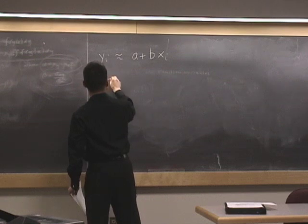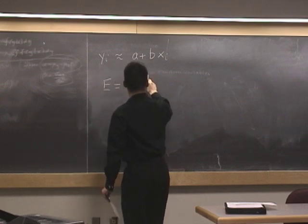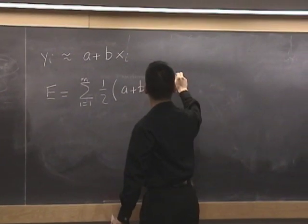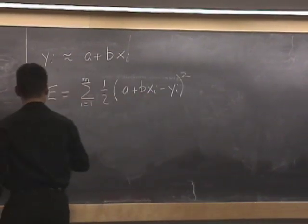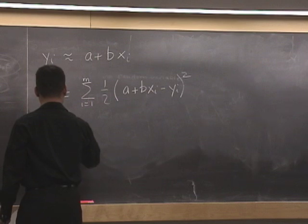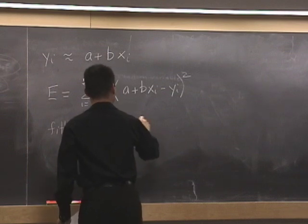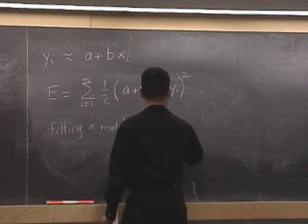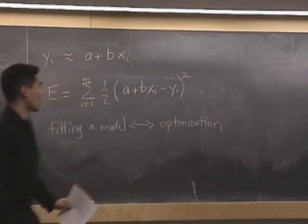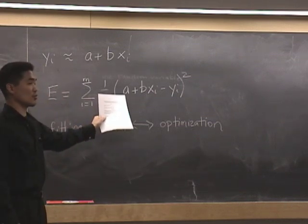And we formulated that as an optimization problem. So we wrote down a cost function like this, and we said that we could fit this model by minimizing this function with respect to the parameters a and b.